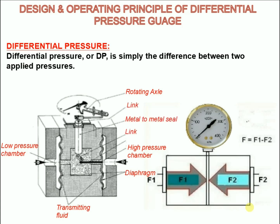A pressure greater than the full scale will close the valve, thus discontinuing the transmission of pressure. Both diaphragms rest on a liquid cushion that allows the instrument to withstand process pressure up to the maximum pressure rating of the instrument.